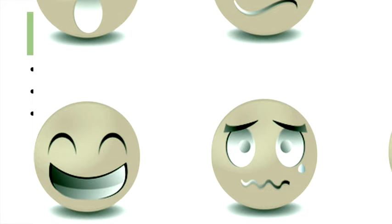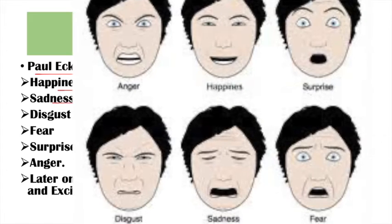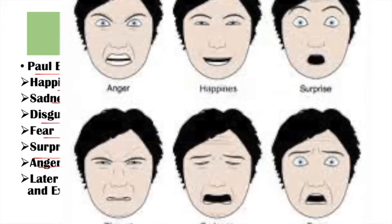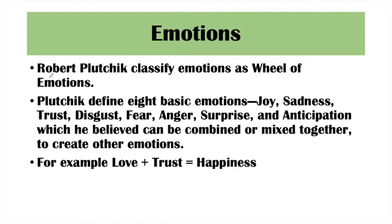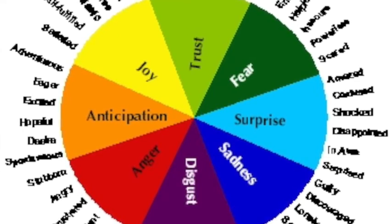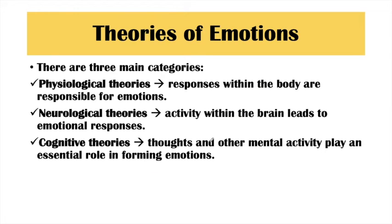Different psychologists have defined emotions in different ways. First is Paul Ekman, who said that human beings have six basic emotions: happiness, sadness, disgust, fear, surprise, and anger. Next psychologist is Robert Plutchik, who gave the 'wheel of emotions.' He said there are eight basic emotions, and combinations of emotions evoke more complex ones. For example, love and trust combine to evoke happiness in any relationship.